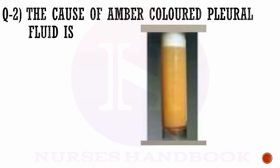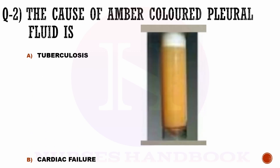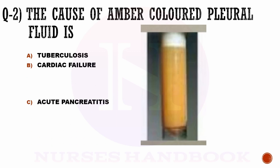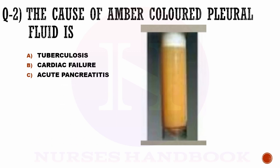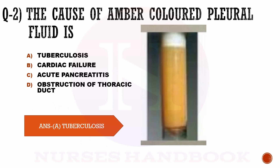Question number 2. The cause of amber colored pleural fluid is: options are a) tuberculosis, b) cardiac failure, c) acute pancreatitis, and d) obstruction of the thoracic duct. The correct answer is option a, tuberculosis.